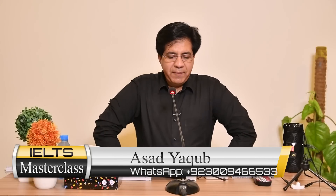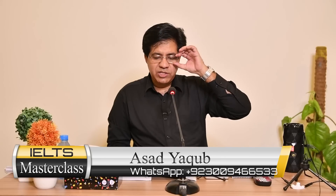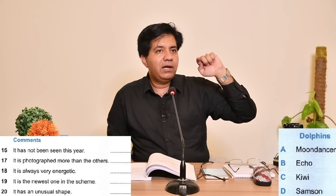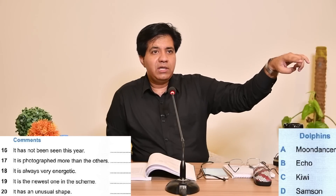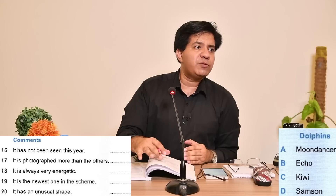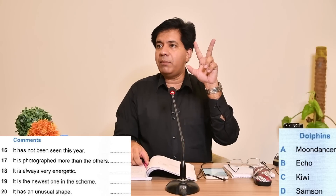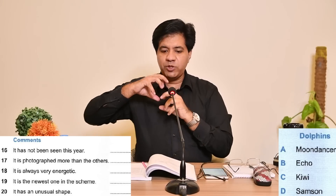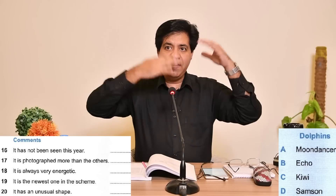Okay guys, now we've got matching type questions. There is one strange thing about this question type: they have given the options A, B, C, D. Usually they give these in questions, but now the latest pattern — because this is Cambridge IELTS Book 10 — they have two options: option one, the names of dolphins are given in the questions, and the comments go in the options. They may replace it as well, so you should be ready.